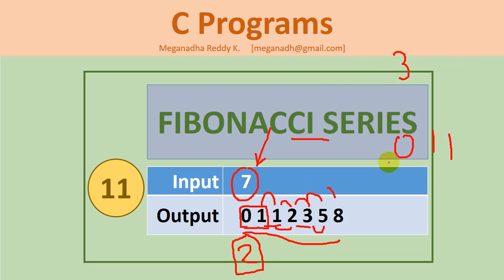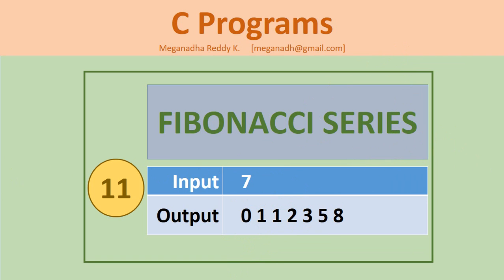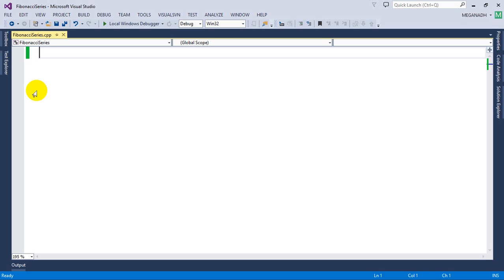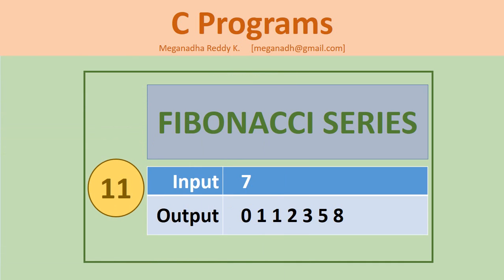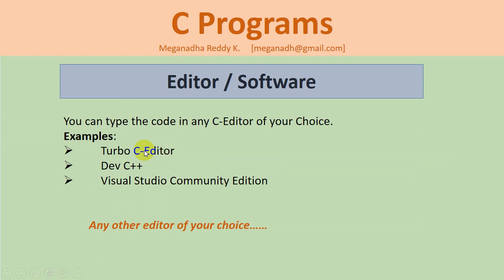So let's get started and write the program to print Fibonacci series. You can write the code in any editor of your choice — you can type it in Turbo C editor, or Dev C++, or Visual Studio, or any other editor that you are comfortable with. You can use it to compile your C code. I'm going to use Visual Studio Community Edition.